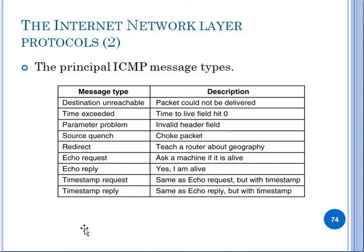Next is echo request and echo reply, which asks a machine if it is alive. A simple echo message is sent with a zero value. Similarly, the timestamp request and timestamp reply are the same as echo request but include a timestamp value. These are the ICMP message types generated when problems occur in the network layer.